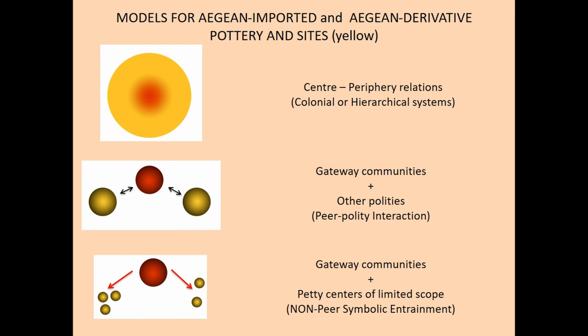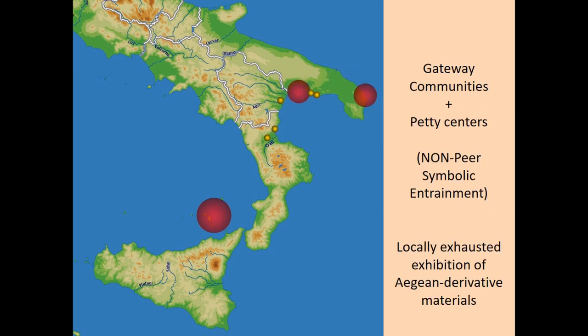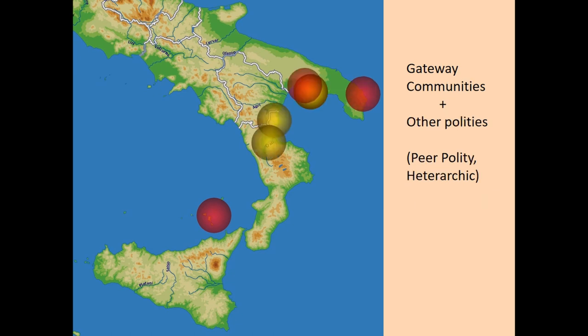The second model is that of gateway communities connected with other polities which are independent in a different direction. The third is gateway communities with techie centers of limited scope without peer symbolic interaction but with a derivative line from the center. It is rather complicated, but we don't think that a hierarchy center-periphery model works because we have a gradient too quick between the sites.